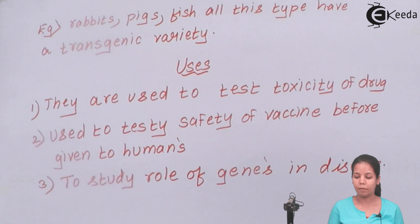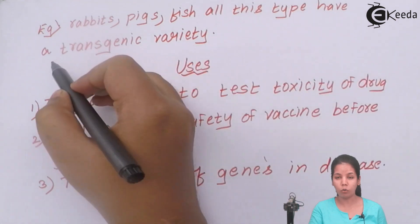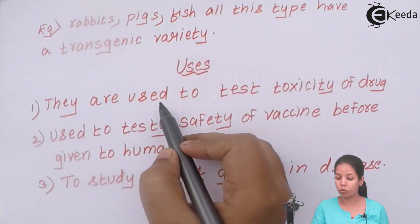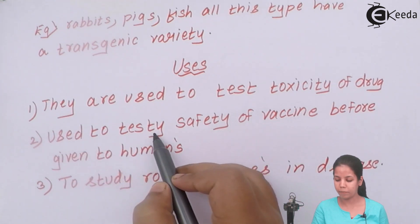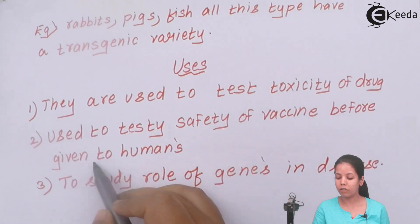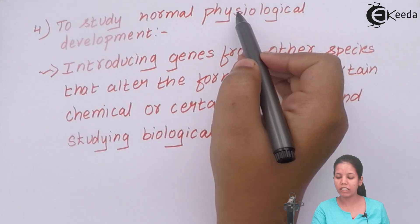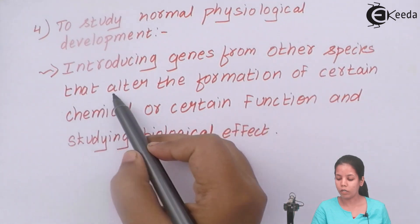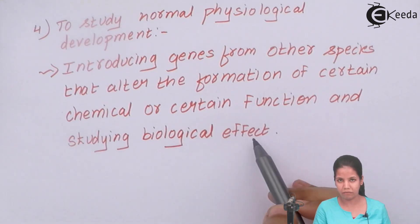Now let us see the examples of transgenic animals: rabbits, pigs, fishes - all these type of animals have a transgenic variety. What are the uses or applications of transgenic animals? They are used to test toxicity of drug first. Second, they are used to test safety of vaccines before given to humans. Third, to study role of genes in diseases. Fourth, to study normal physiological development - introducing genes from other species that alter the formation of certain chemicals or certain functions and studying the biological effects.